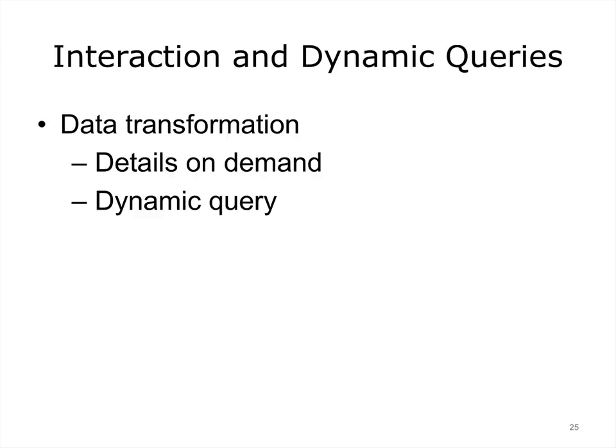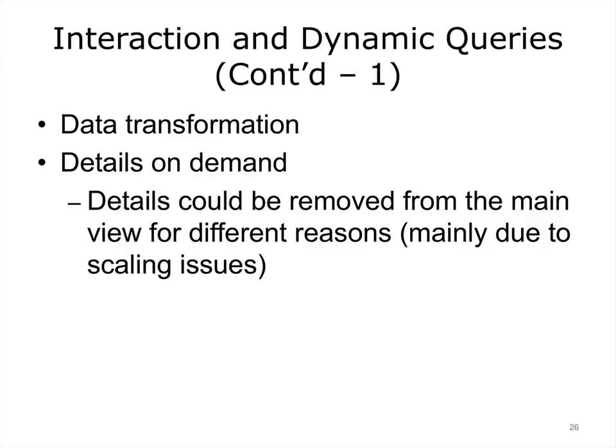There are many situations in which no clever distortion technique can help designers fit all data on the screen, or the data is so complex that no single visualization can uncover its hidden properties. In these cases, designers often use interactive visualizations that allow users to actively explore and vary their dimensions. The two techniques we will discuss include details on demand and dynamic query. In the details-on-demand approach, details can be removed from the view but made available on demand — for example, a user might hover the mouse over a particular point to examine its components. Mouse-over is a common way to trigger details.